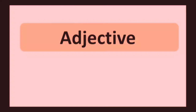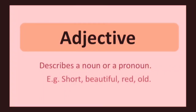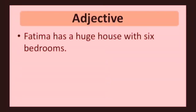Adjective. Adjective describes a noun or a pronoun. Examples: short, beautiful, red, owl. Fatima has a huge house with six bedrooms. Huge is the adjective in this sentence.